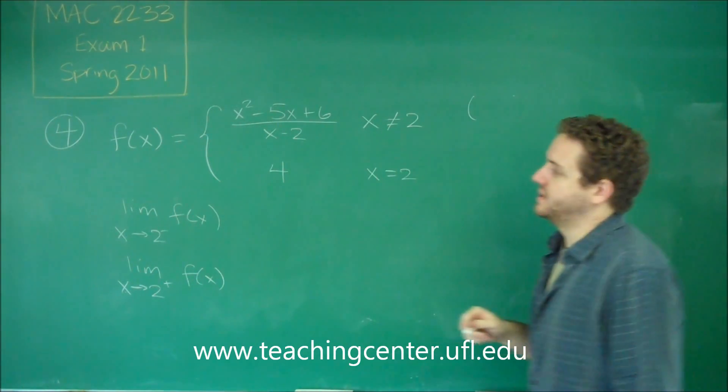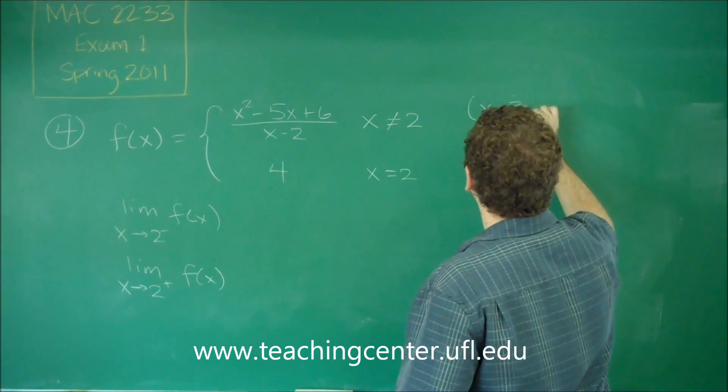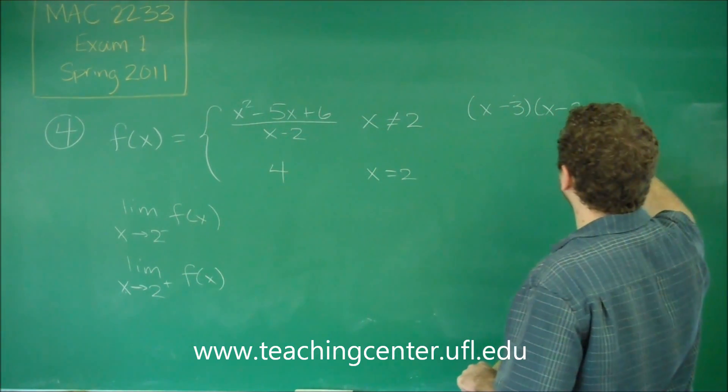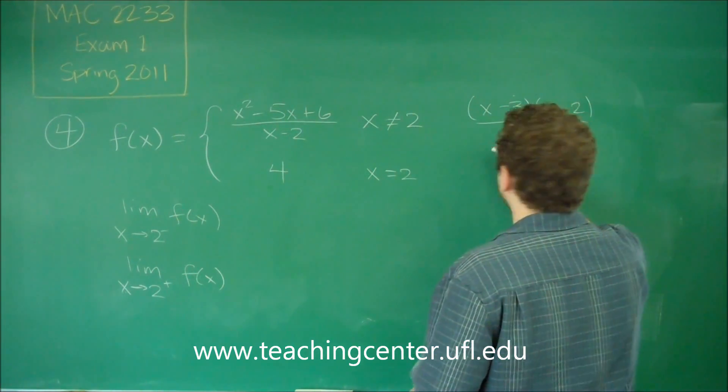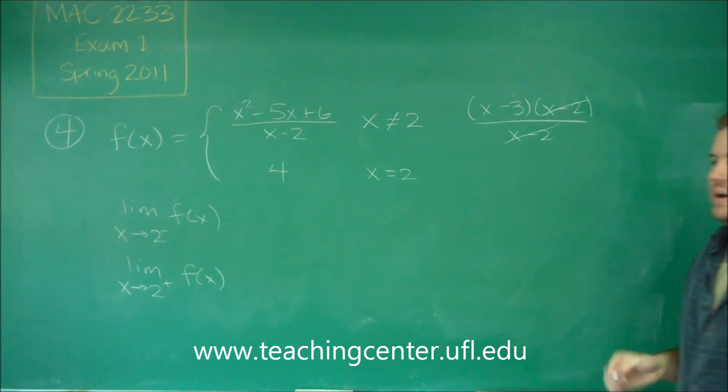So our numerator, x squared minus 5x plus 6, that factors into x minus 3, x minus 2. On the denominator, we have x minus 2. So you can see that actually cancels out, and now we have a pretty easy situation here.